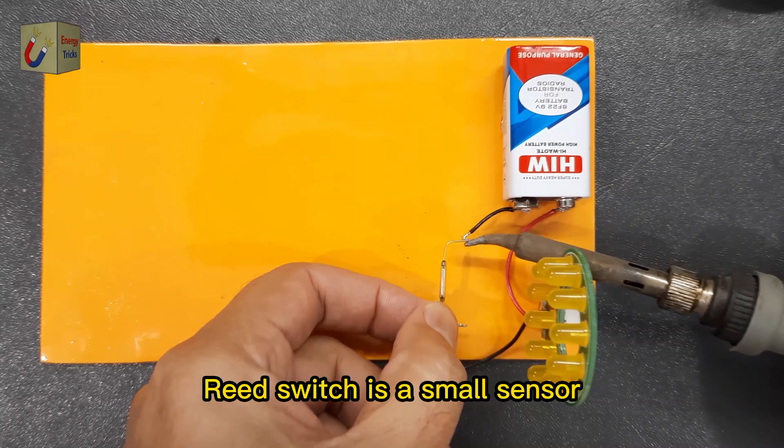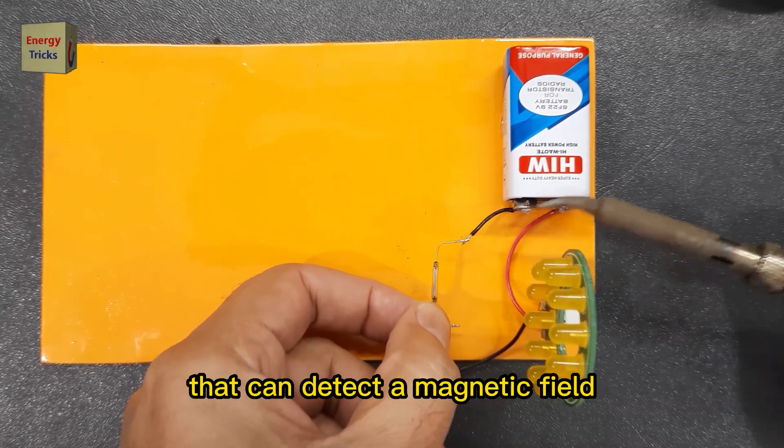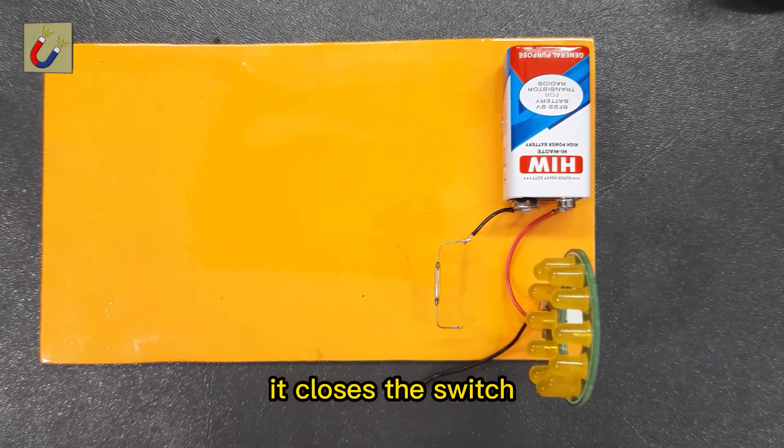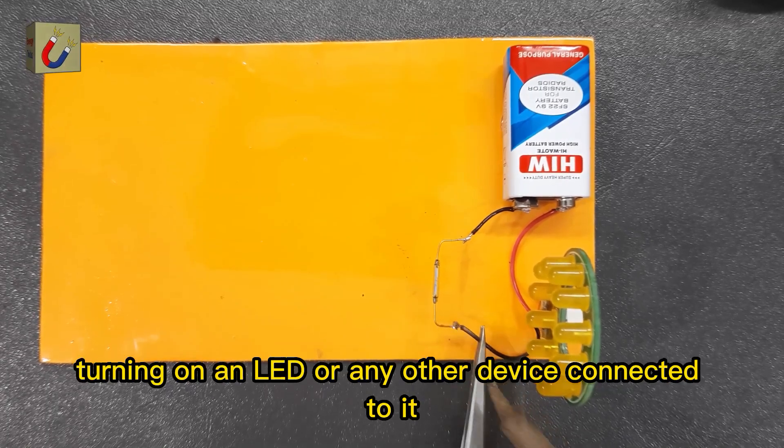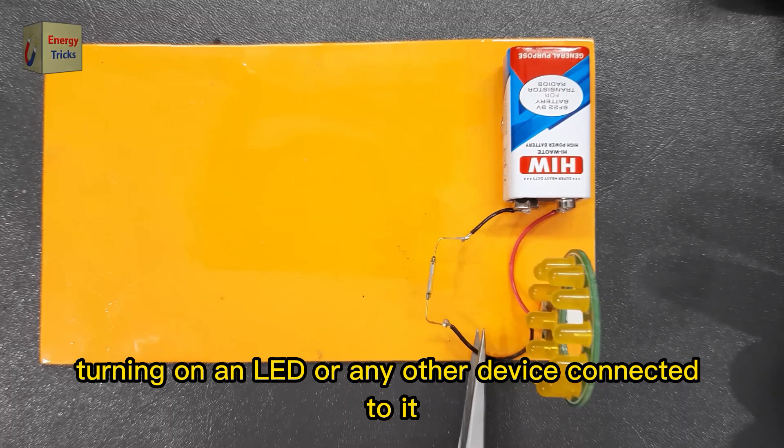Reed switch is a small sensor that can detect a magnetic field. When a magnet comes close, it closes the switch and allows electricity to flow through, turning on an LED or any other device connected to it.